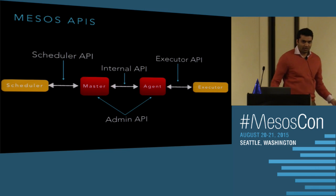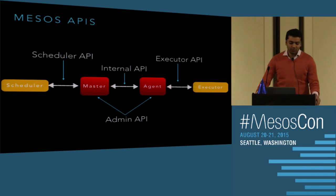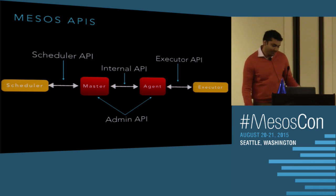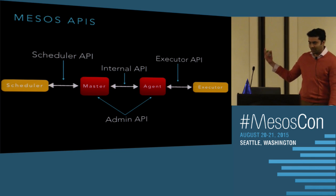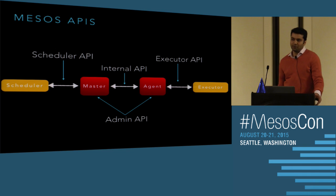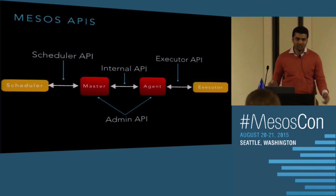Let's start with what APIs we currently provide. For a distributed system like Mesos, there are a lot of different moving parts. If you have a scheduler, you use a scheduler API to talk to the master — things like launch task or kill task. On the executor side, we use the executor API to talk to the agent for things like sending status updates. These are what we call the framework APIs. We also have an admin API for getting statistics and system state from endpoints like state.json or metric snapshot. There's also an internal API that Mesos uses between master and agent.